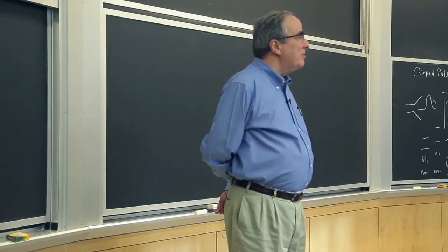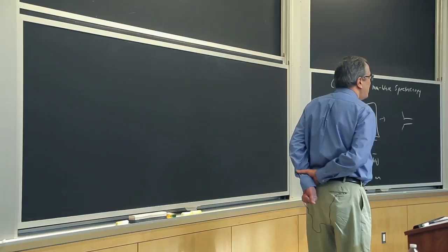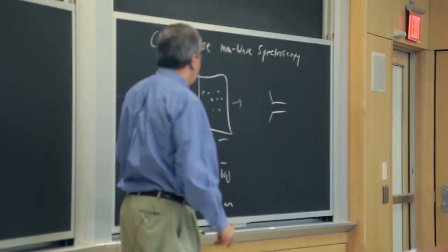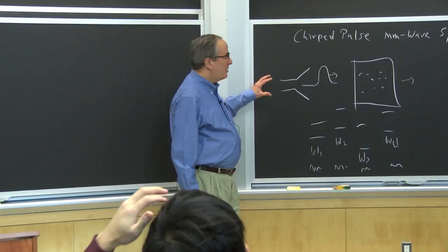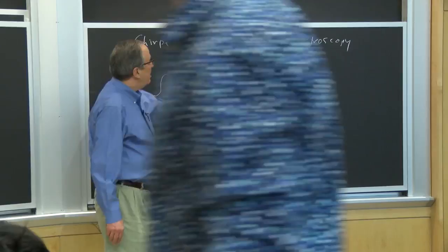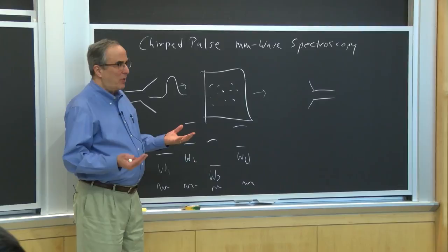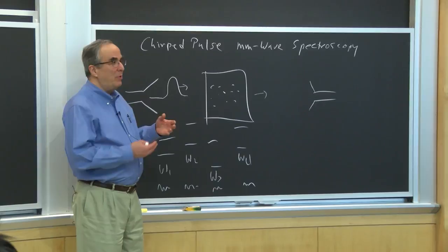Today's lecture is one I've never given before, and it's very much related to the experiments we're doing right now in my research group. We have a chirped pulse of microwave radiation propagating through a sample. It causes all of the molecules in the sample to be prepared in some way — we call it polarized.